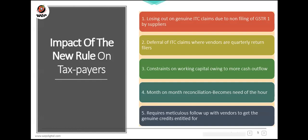Question on quarterly filers: you can request your supplier to upload invoices every month. Even if they file quarterly, there is no rule preventing them from uploading invoices monthly. You will get those invoices in GSTR 2A with a filing status of 'no', and you can still calculate 120% on that. However, if the invoice is not present at all in GSTR 2A, you cannot include it in the 120% calculation — so it is better to ask your vendor to upload it even if filing quarterly.